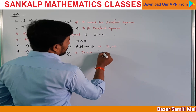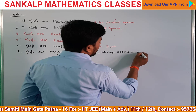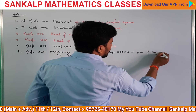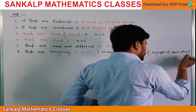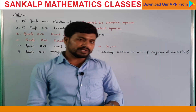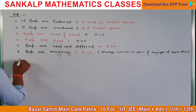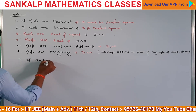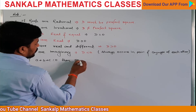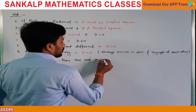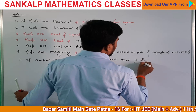Imaginary roots always occurs in pair and conjugate of each other — हमेशा pair में होगा और एक दूसरे की conjugate होगी। छठे number में: अगर A + B + C = 0 हो जाए, then one root is 1 and other is C/A।